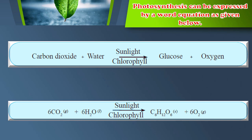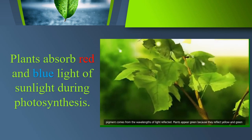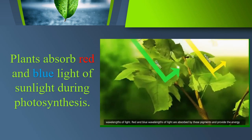Photosynthesis can be expressed by a word equation as given below. Plants absorb red and blue light of sunlight during photosynthesis.